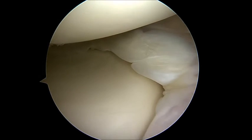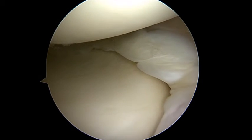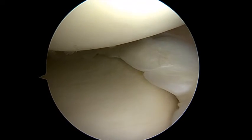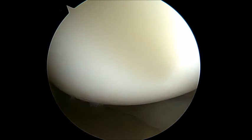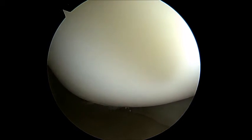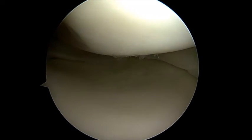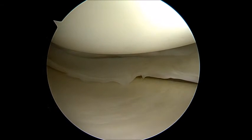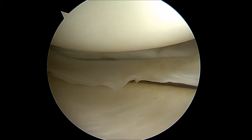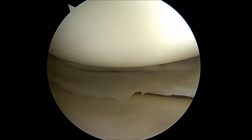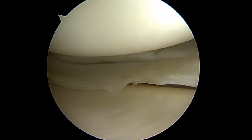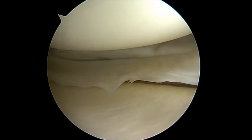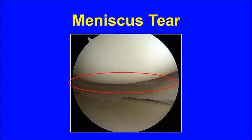Initial inspection shows that the front of the meniscus is unremarkable, the cartilage of the femoral condyle appears normal, and the cartilage of the tibial plateau appears normal. Further inspection in the back shows a tear in the posterior portion of the medial meniscus seen here. Here is a still photograph showing the meniscal tear outlined in the red oval.